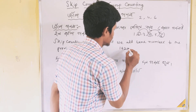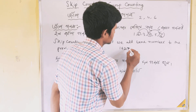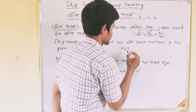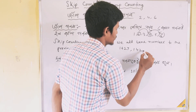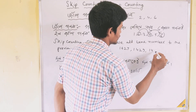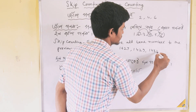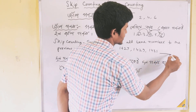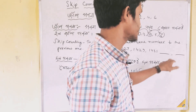One, four, two, seven. One, four, two, nine. One, four, three, one. One, four, three, one. This is the dash dot.